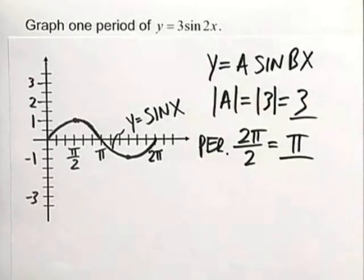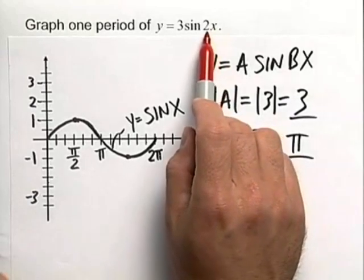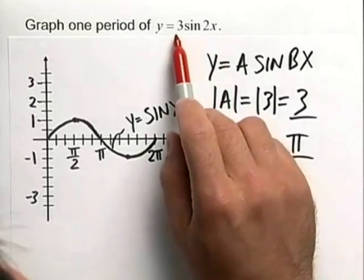So that's some information that we can glean from the function. Now let's think in terms of transformations of functions. We have a horizontal compression by a factor of 2, because the 2 is inside, and a vertical stretch by a factor of 3.